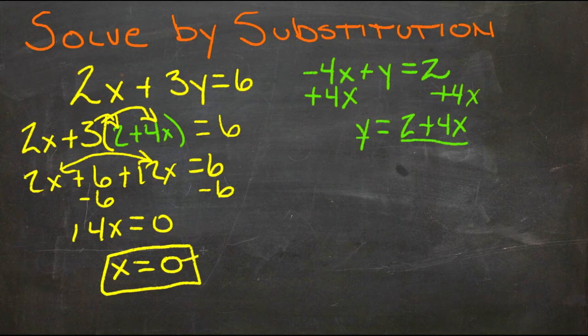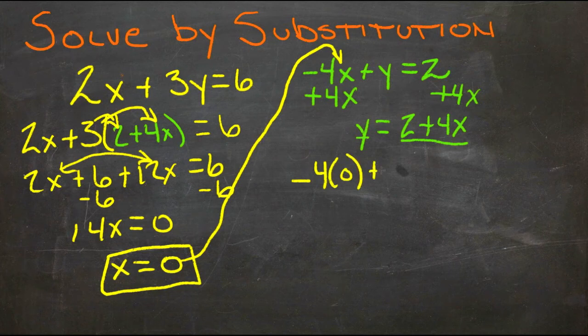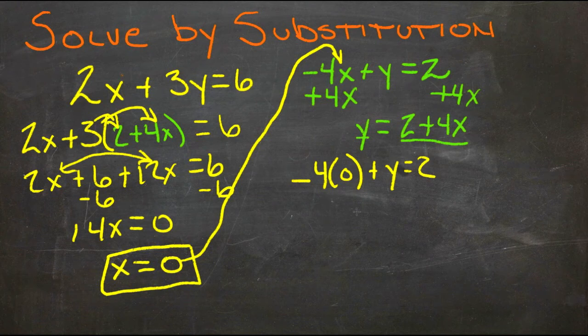So now we have a numerical value for x that we can plug into the other equation in place of x up here. So then we'll rewrite this equation as negative 4 times 0 plus y equals 2. Negative 4 times 0 is 0, so we just get y equals 2.